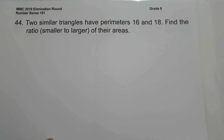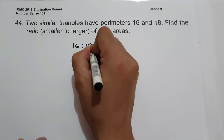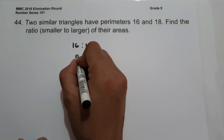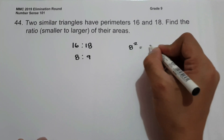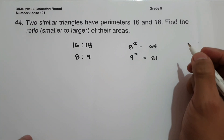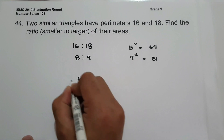On number 44, two similar triangles have perimeters 16 and 18. Find the ratio from smaller to larger of their areas. Whenever you encounter this kind of problem, get the square of their ratio. The ratio of the two triangles is 16 to 18, which simplifies to 8 to 9. Squaring each: 8 squared is 64, and 9 squared is 81. Therefore, the ratio of their areas is 64 to 81, and this is our answer.